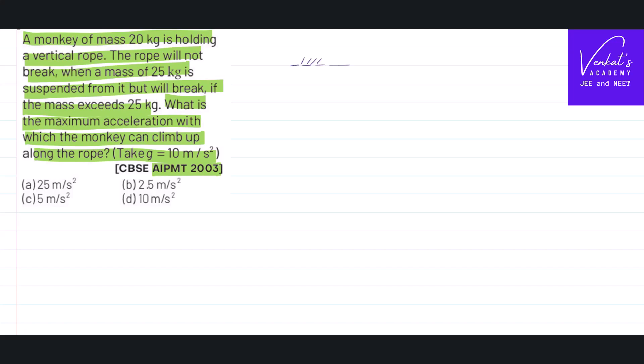There is a rigid support to which a rope is suspended. On this rope there is a monkey whose mass is 20 kg trying to climb up. With what acceleration it can climb is the question. As this is a weight suspending on this rope, tension will be generated, which is always acting towards the point of suspension.